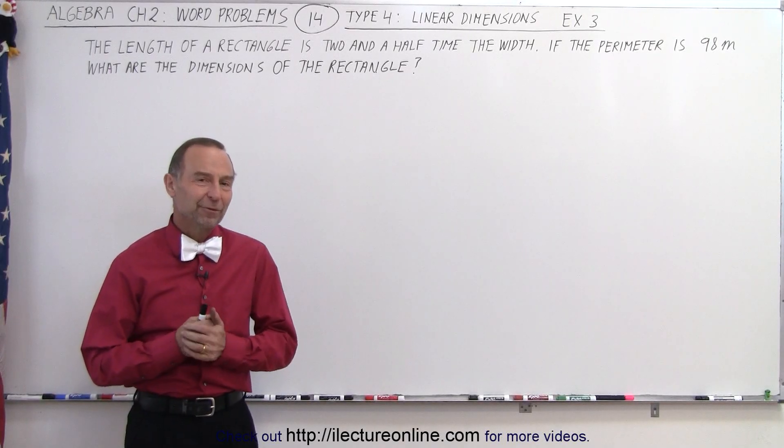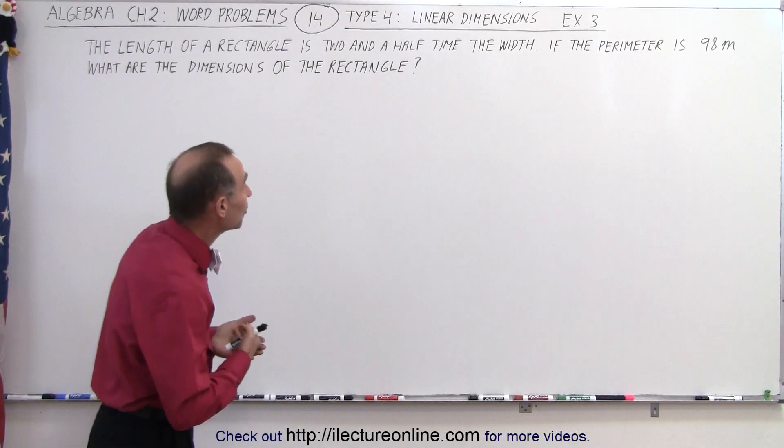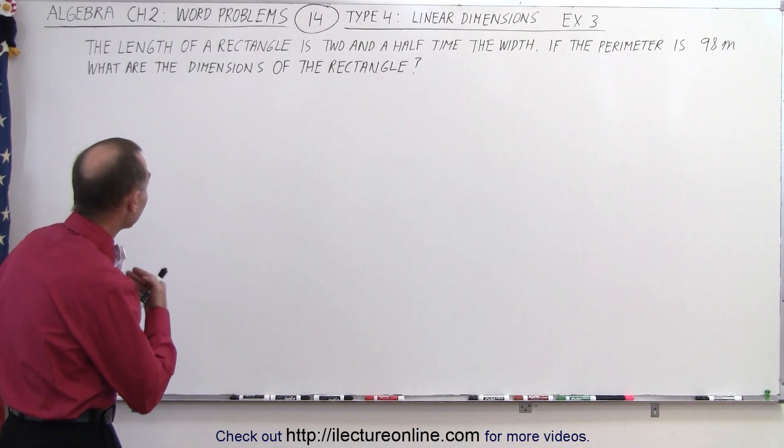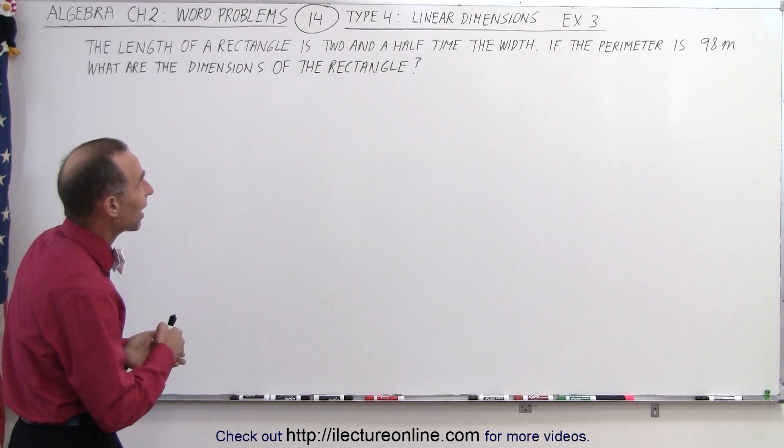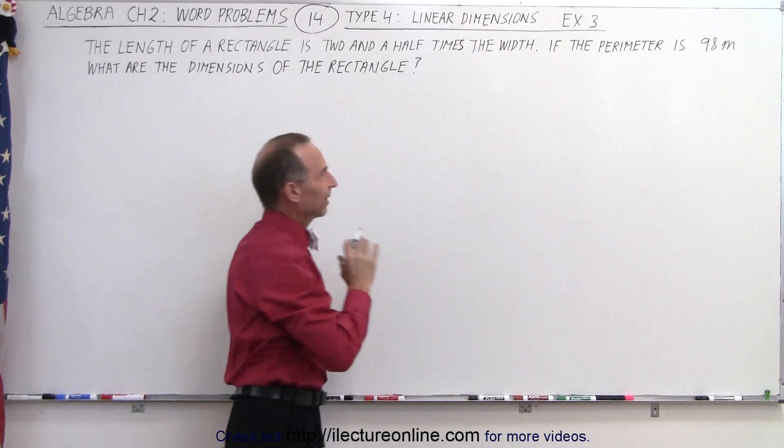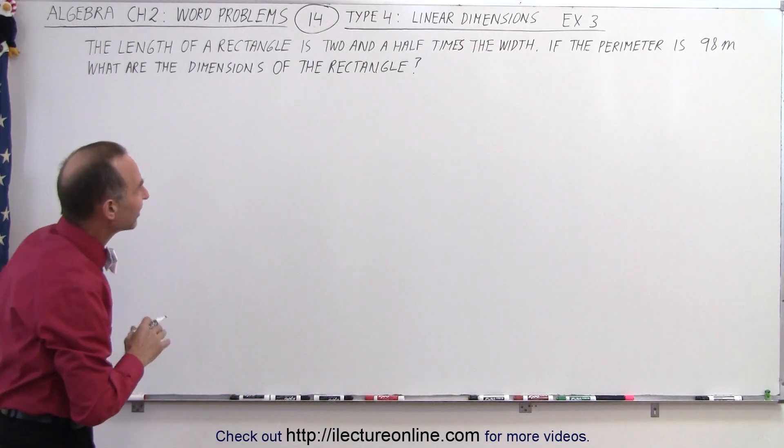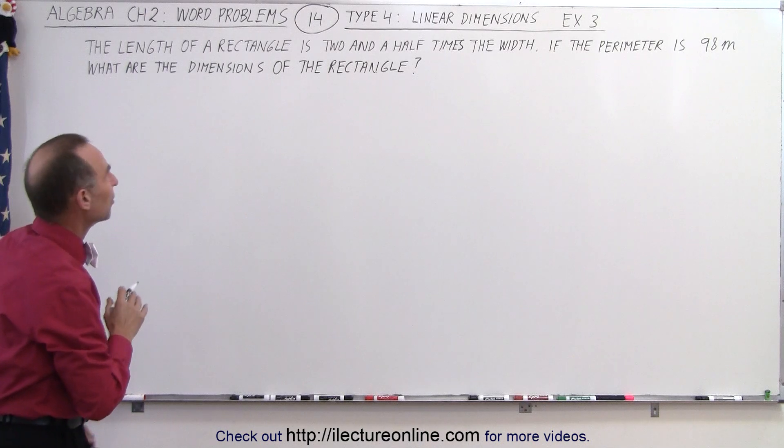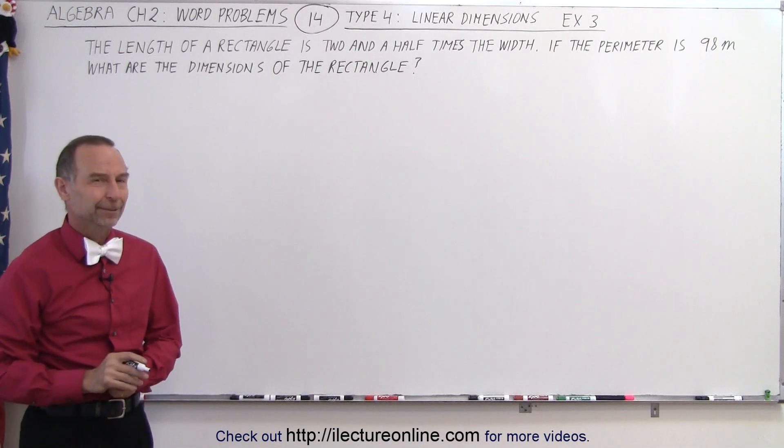Welcome to ElectronLine, and for our third example, we're going to deal with a rectangle. The length of a rectangle is 2.5 times, I forgot the S here, times the width. If the perimeter is 98 meters, what are the dimensions of the rectangle?